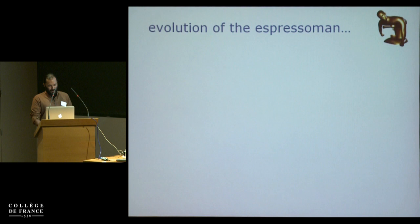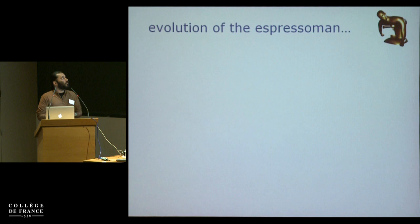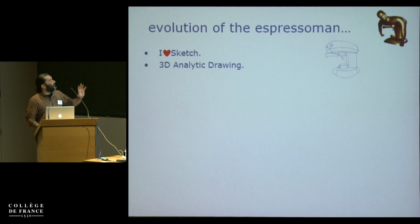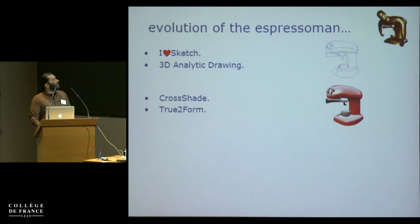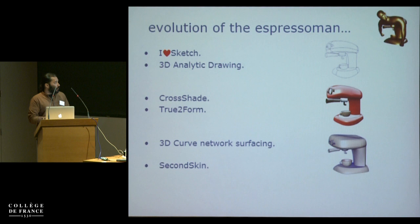This talk is about conceptual modeling — it comes a little later in the stage when your ideas have crystallized and you're looking to communicate them with others. I'm going to take you through a bunch of different projects from my group over the years. I call it the evolution of the 'espresso man,' a benchmark we've used in our lab for drawing systems. I'll present two early systems from around 2008-2009: I Love Sketch and Analytic Drawing, plus two newer ones called CrossShade and True Form, and finally Second Skin.